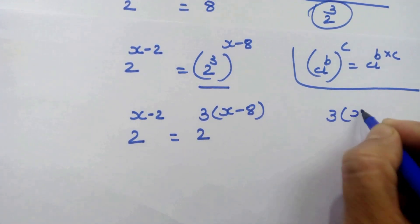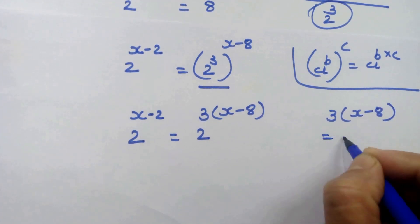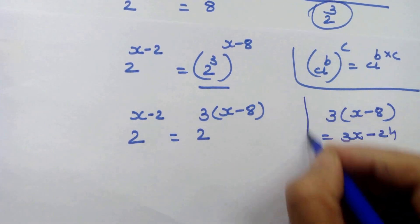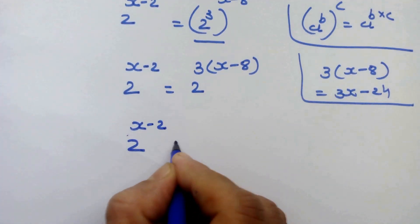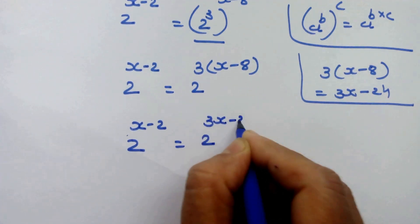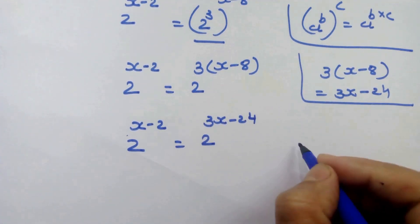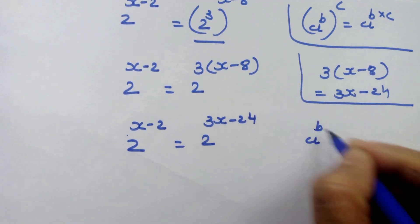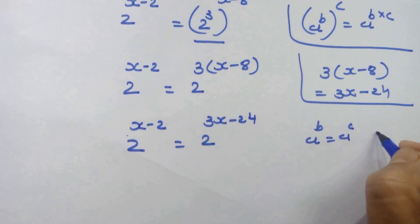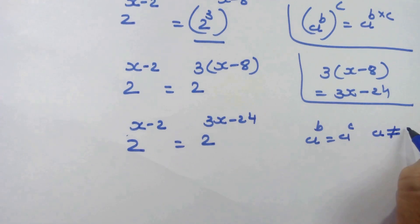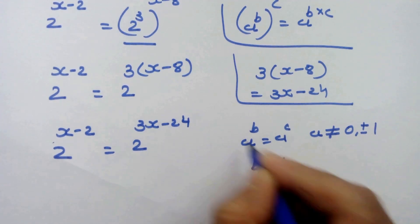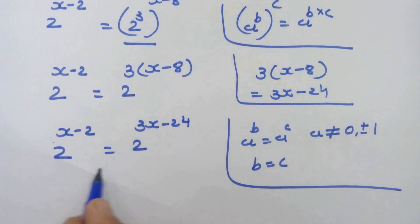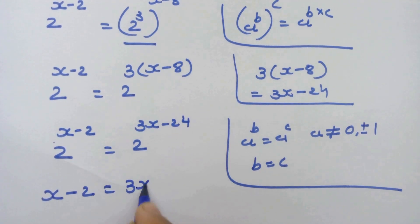So 3 into x minus 8 is equal to 3x minus 24. So we can write 2 raised to x minus 2 is equal to 2 raised to 3x minus 24. Now we have the same base on both sides. If a raised to b is equal to a raised to c, where a is not equal to 0 or plus or minus 1, then we can equate b equal to c. By using this rule, we can equate the exponents: x minus 2 is equal to 3x minus 24.